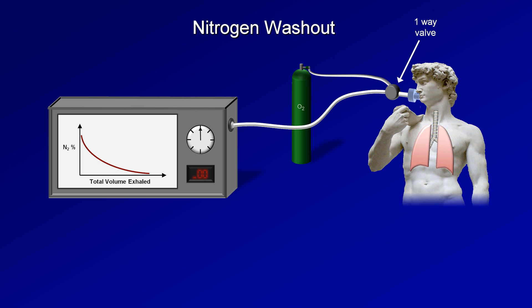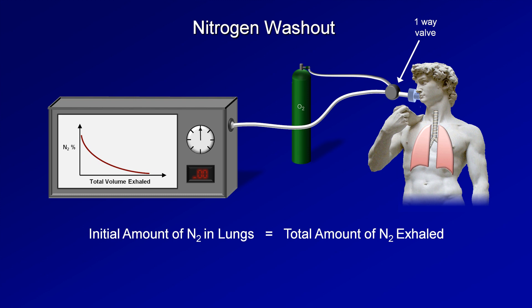Similar to helium dilution, the initial amount of nitrogen in the lungs must equal the total amount of nitrogen exhaled. Thus, the FRC is equal to the total volume exhaled over all of the breaths during the test times the average concentration of nitrogen in the exhaled gas divided by the estimated initial concentration of nitrogen within the alveoli. Nitrogen washout has the same general advantages and disadvantages as helium dilution, with the one added disadvantage of possibly potentiating carbon dioxide retention in patients with severe COPD due to the 100% oxygen's effect on overcoming pulmonary hypoxic vasoconstriction, thus worsening VQ mismatch.